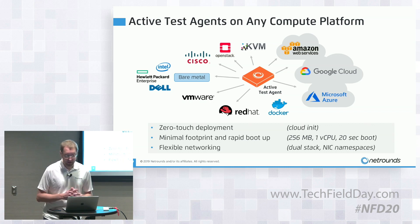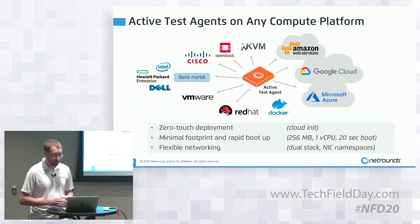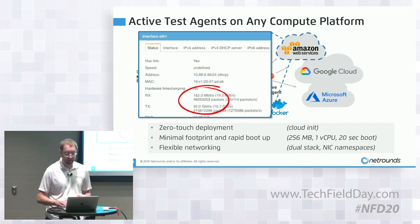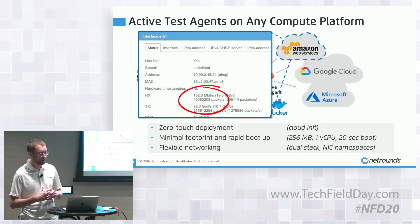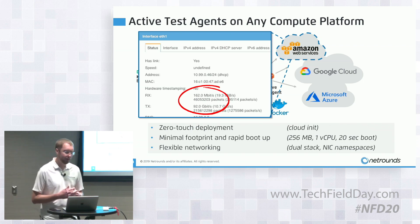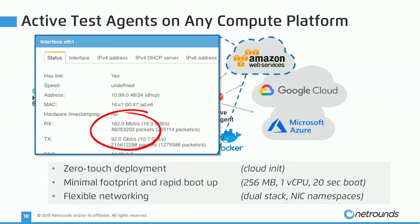The same test agent also scales from being very, very small up until the largest instances. This is just a simple screenshot of when we run on the new C5N machines in Amazon. In this example, we were pushing close to 100 gig on a single NIC in Amazon. Same software all the way from very small up until the largest machines available.